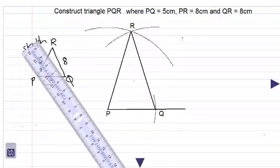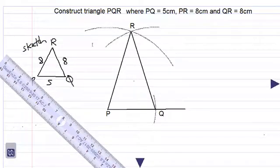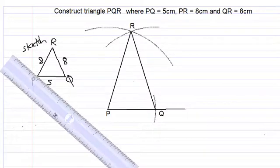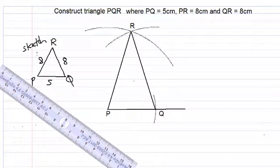And there we have it, that is our triangle PQR, it is an isosceles triangle, and remember it is always handy to do a little sketch before beginning your construction. Thanks for watching, and do have a pleasant day.